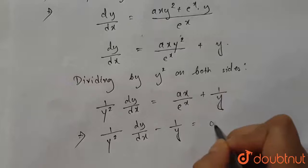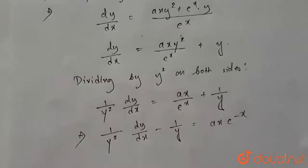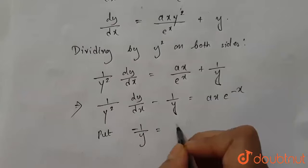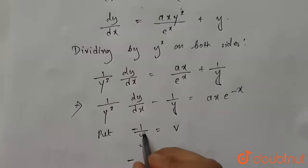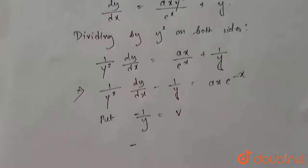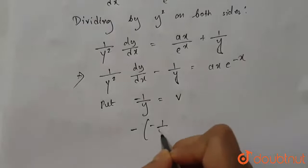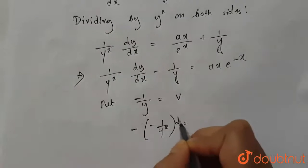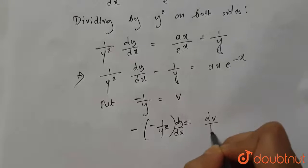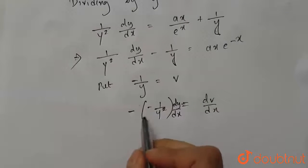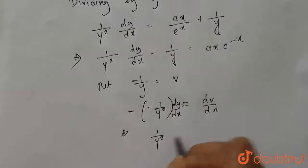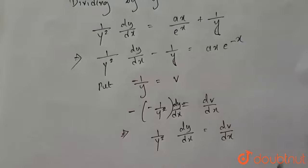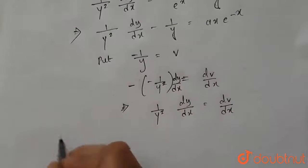Now let's take v = −1/y. Then d/dx(−1/y) = (1/y²)·dy/dx = dv/dx. The negatives cancel, so (1/y²)·dy/dx = dv/dx. Now substituting into our equation gives us dv/dx in place of (1/y²)·dy/dx.